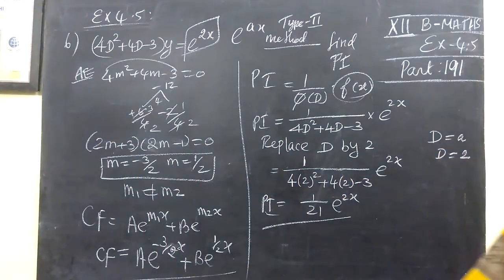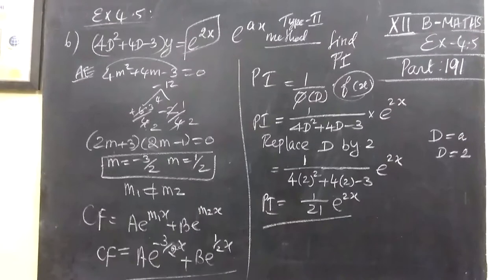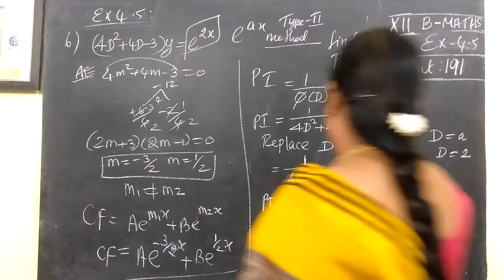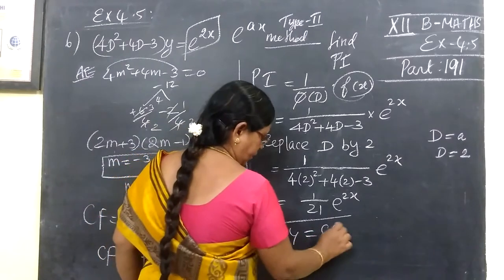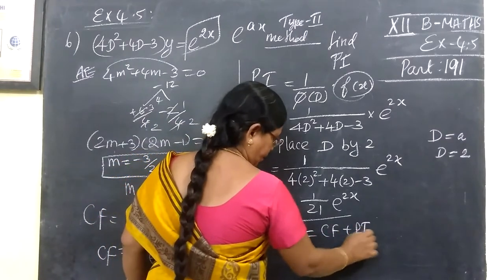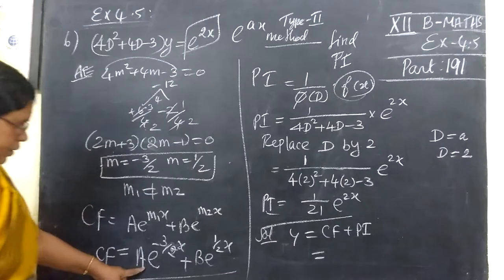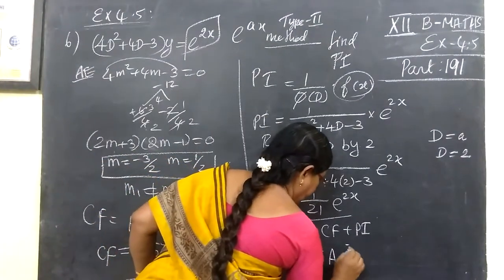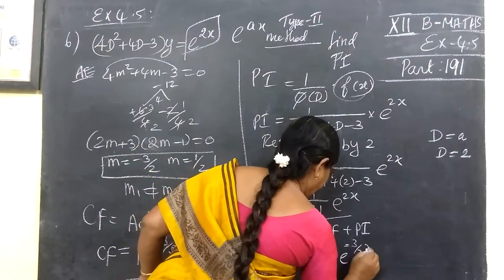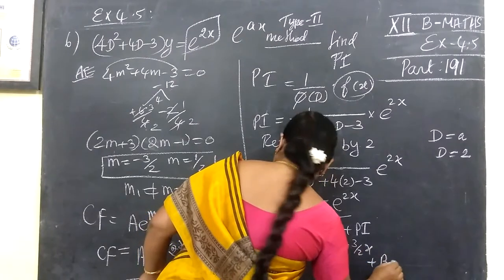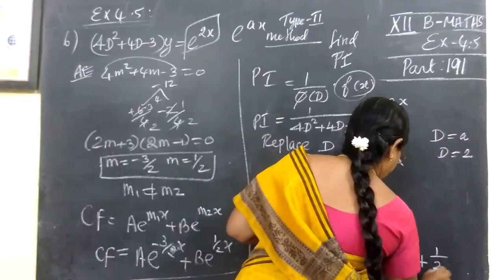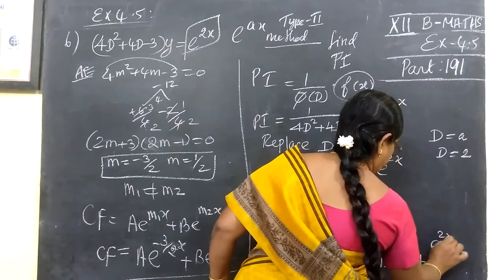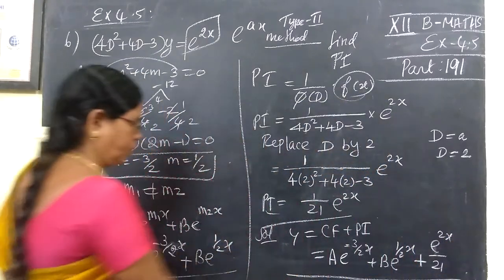The general solution is there in that form: y equal to CF plus PI. CF can have to be Ae^(minus 3 by 2 x) then Be^(1 by 2 x), then plus 1 by 24 e^(2x).